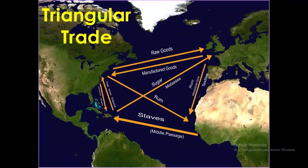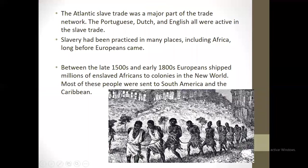The plantations we always see in films, where Black people worked. A lot of slaves were sent to work in those plantations. The Atlantic slave trade was a major part of this trade network. The Portuguese, Dutch, and English were all active in the slave trade.